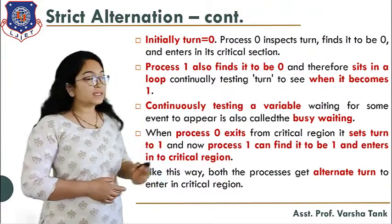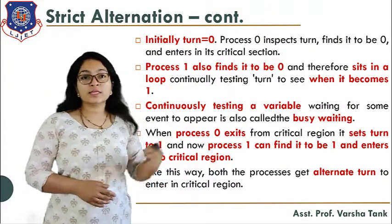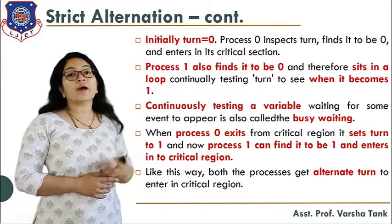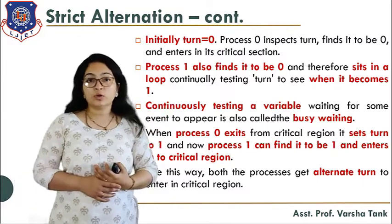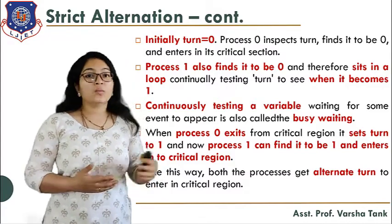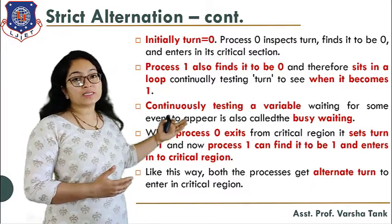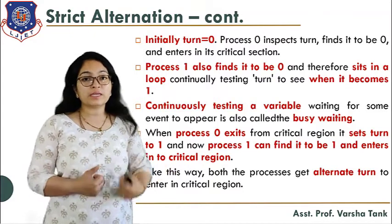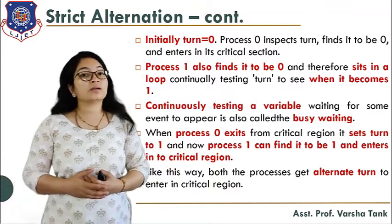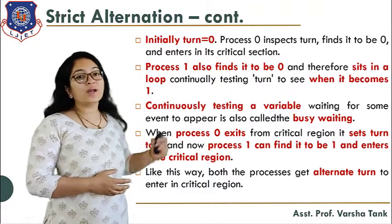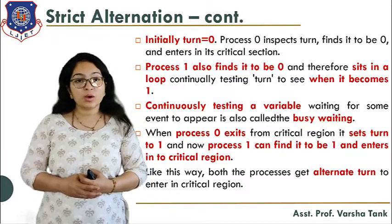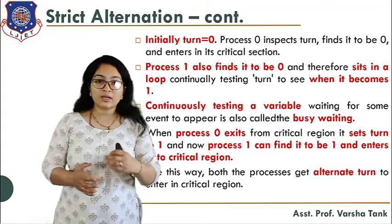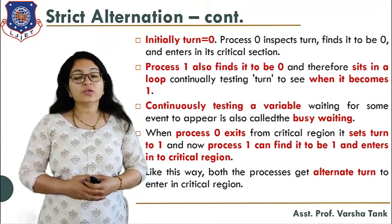Initially turn is 0. Process P0 inspects the turn, finds it 0, and enters the critical section. Process P1 also finds it 0 and sits in a loop continuously testing turn to see when it becomes 1 — this is the busy waiting. When P0 exits the critical section it sets turn to 1, and now P1 finds its turn is 1 and enters the critical section. Both processes get alternate turns to enter the critical section.